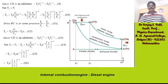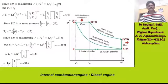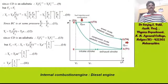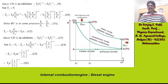Since CD is adiabatic, T4 × V4^(gamma−1) = T3 × V3^(gamma−1), which is equation 9. But V4 = V1, therefore T4 = T3 × (V3/V1)^(gamma−1) = T3 × (V3/V2 × V2/V1)^(gamma−1), which simplifies to T3 × E^(gamma−1) × (1/R1)^(gamma−1).